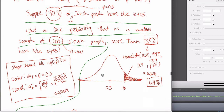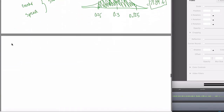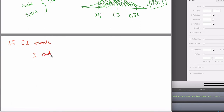Let's get into an example. For a 4.5 confidence interval, I need a yes-or-no question. For instance: do you have a dog? Maybe I'm interested in the proportion of all New Yorkers that have a dog. But there are a lot of New Yorkers, so I can't ask all of them — and I just want yes or no, not how many dogs. So I randomly select 500 New Yorkers and find that 16% have a dog.